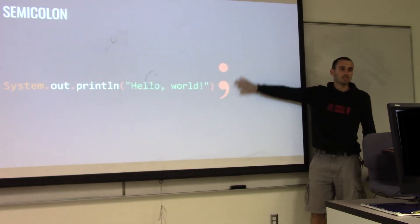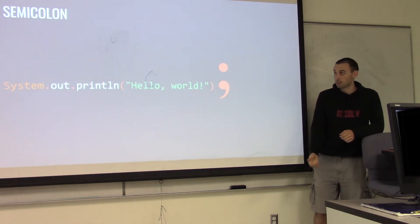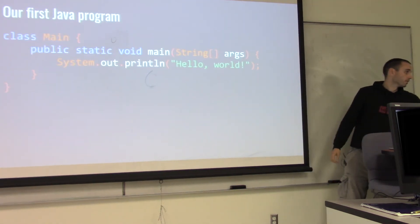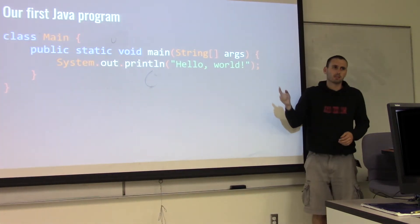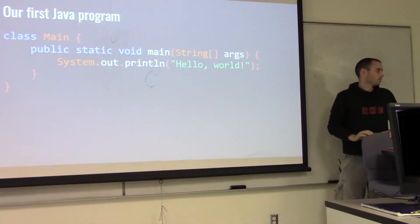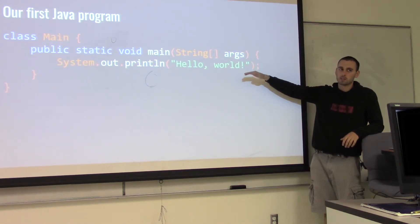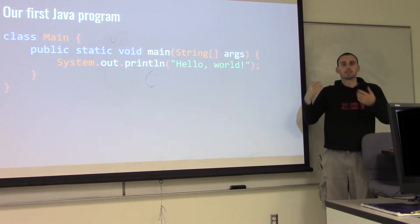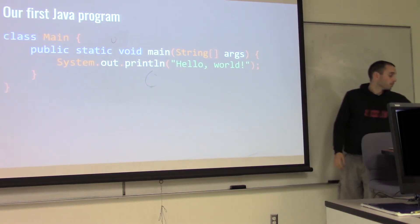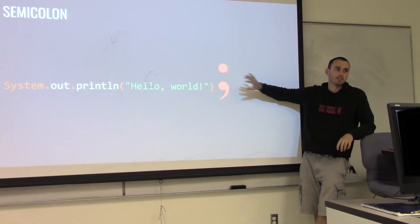You need to end all of your statements with semicolons. Notice that lines ending with braces don't have semicolons because they're not considered statements. Everything inside your main — every time you write something you want it to do, like 'print this thing' — that is a statement and you always have to end it with a semicolon. If you don't, you're going to get something really cryptic. Drill this into your heads: semicolons at the end of your statements.